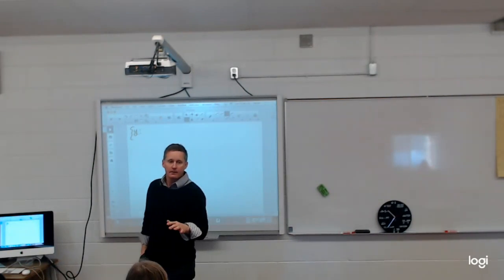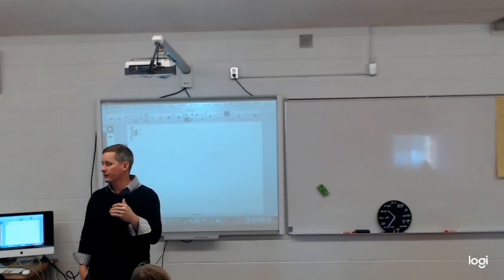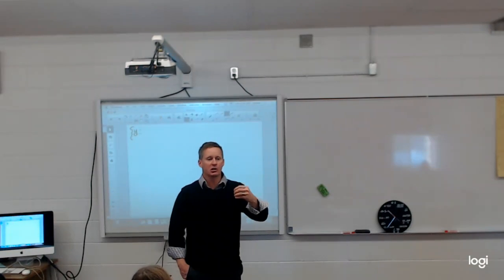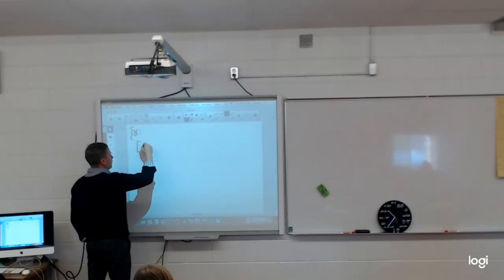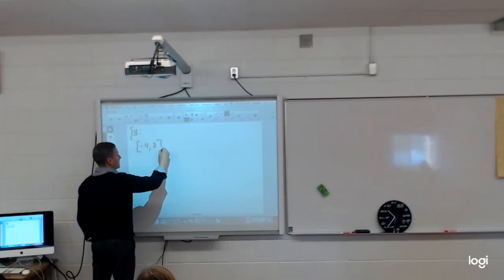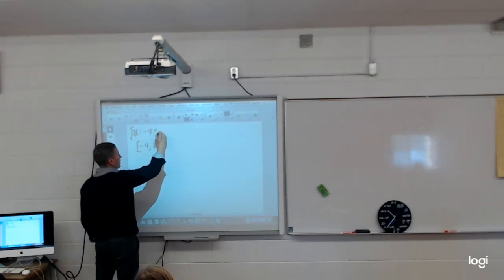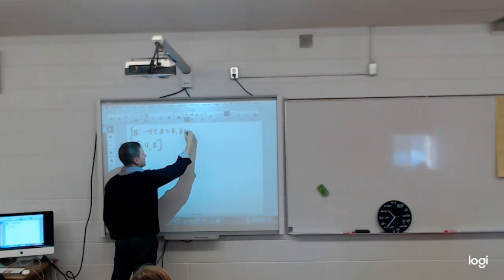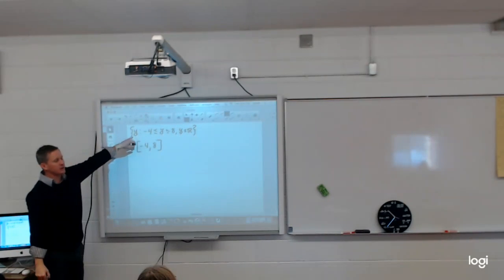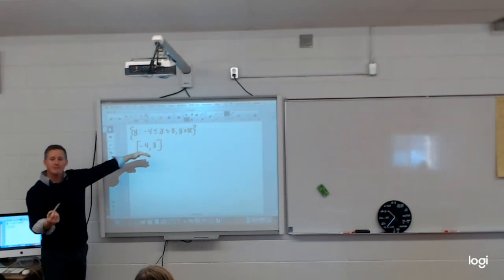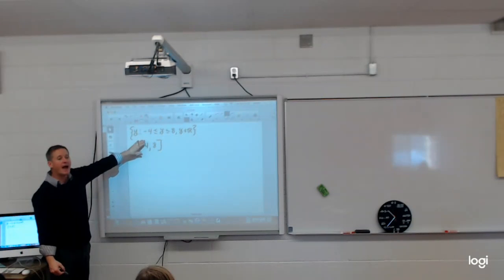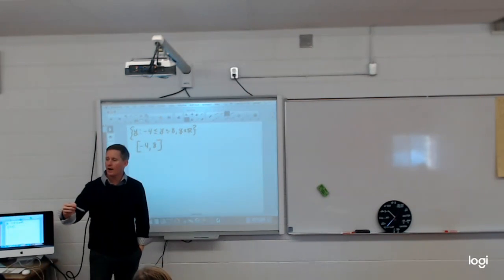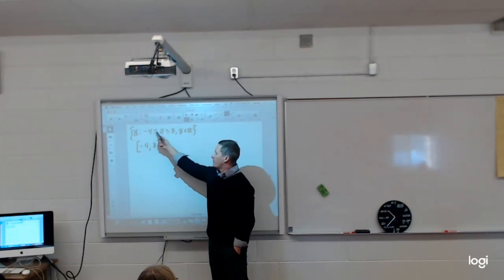I'm going to clean that up. The graph goes from negative 4 to 8. When I write this out, I prefer smallest to largest: negative 4 is less than or equal to y, less than or equal to 8, where y is an element of all reals. That means my y values are all in between negative 4 and 8 on that graph.